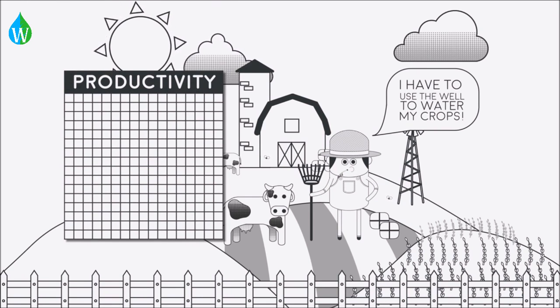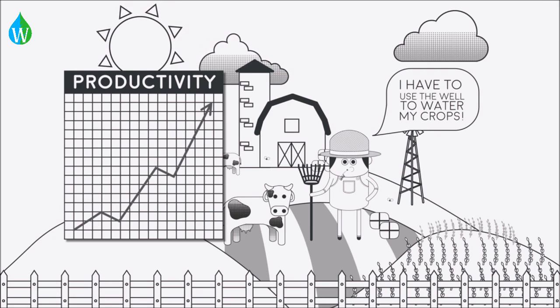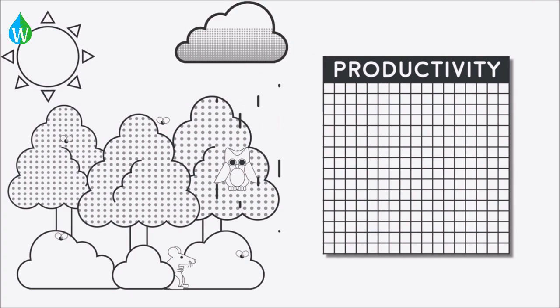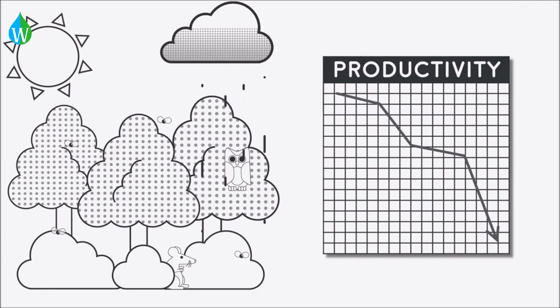They are easier to control and can easily be designed for high productivity. The productivity in natural ecosystems is much more variable and depends on the environment.